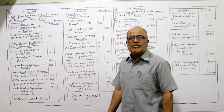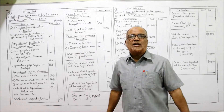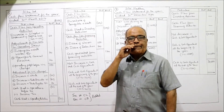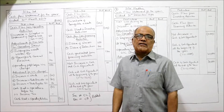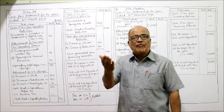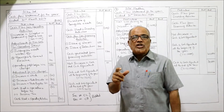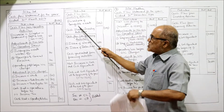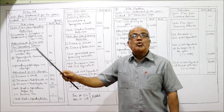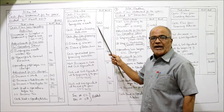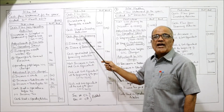Cash flow from investing activity — we consider fixed assets. Tangible assets: last year 200, current year 300 — they have increased. When assets increase, we assume during the year they were purchased. Purchase of tangible assets: 100. When we purchase anything we make a payment, so there is cash outflow — take it in bracket (negative). Cash used in investing activity: minus 100.